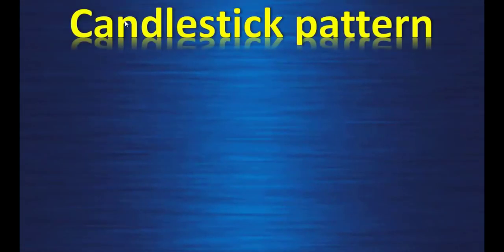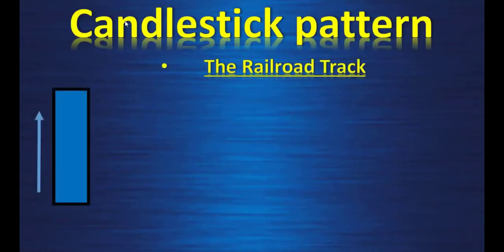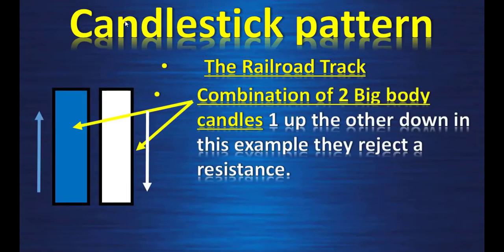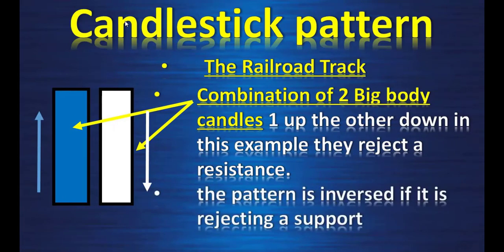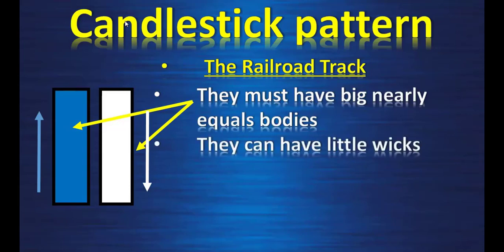Second candlestick pattern: the railroad track. It's a combination of two big body candles — one up, the other down. In this example they reject a resistance. The pattern is inversed if it is rejecting a support. They must have big, nearly equal bodies. They can have little wicks.